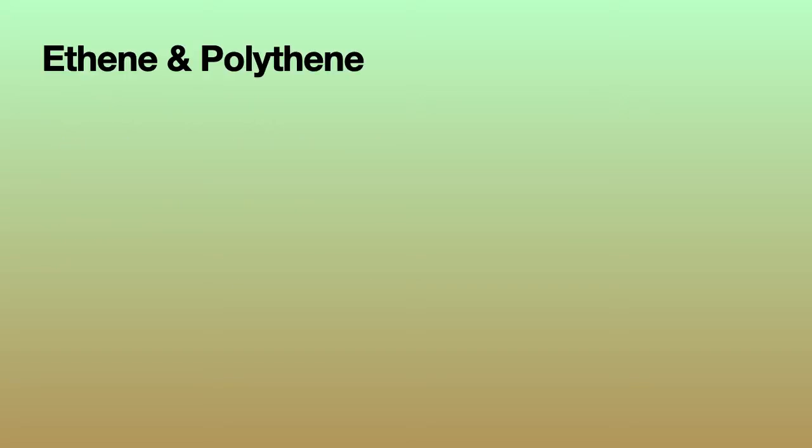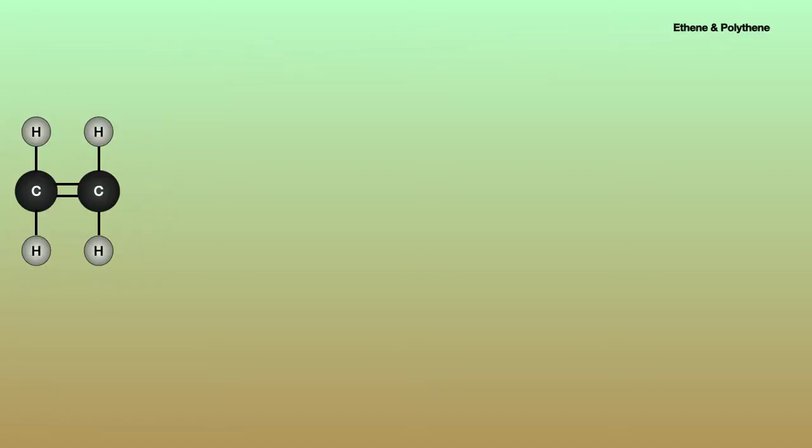Okay, we'll start by looking at ethene. So here is ethene. Two carbons, four hydrogens, and there in the middle you've got that carbon to carbon double bond that means that ethene is unsaturated.